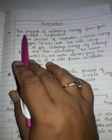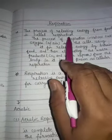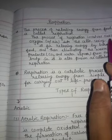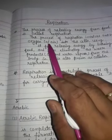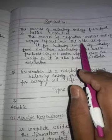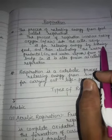Respiration: the process of releasing energy from food is called respiration. The process of respiration involves taking oxygen of air into the cell, using it for releasing energy by burning food.